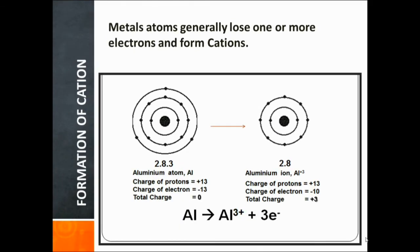Metals generally lose one or more electrons and form cations. Consider the example of aluminium — atomic number 13, meaning it has 13 protons and 13 electrons. Configuration will be: K shell — 2 electrons, L shell — 8 electrons, M shell — 3 electrons. The M shell is incomplete; it must have eight electrons. So aluminium stabilizes itself by losing these three electrons. After losing electrons, it becomes 10 electrons — 2 in the first shell and 8 in the second shell. Total number of electrons is 10, and protons remain 13.